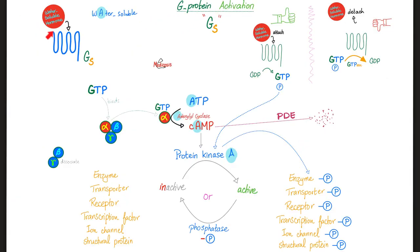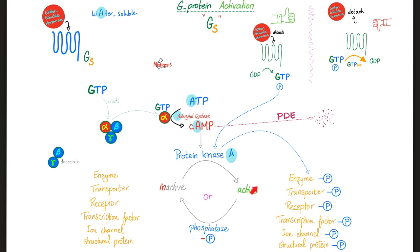Here is the G-protein story again. A water-soluble hormone binds the G-protein receptor — let's call it G-S coupled. GTP binds and the alpha subunit kicks beta and gamma away. GTP and the alpha subunit activate adenylate cyclase to convert ATP into cyclic AMP, which then activates protein kinase A. As a kinase, it adds a phosphate to enzymes, transporters, receptors, transcription factors, ion channels, and more. Activation or inactivation depends on phosphorylation versus dephosphorylation — kinase versus phosphatase.